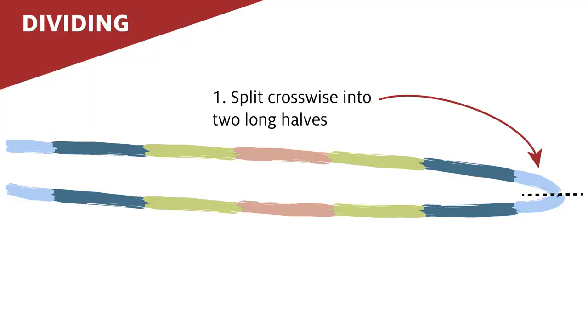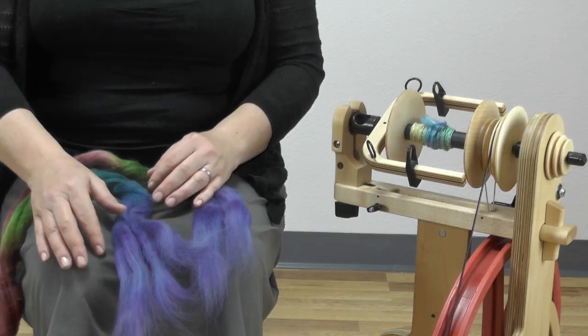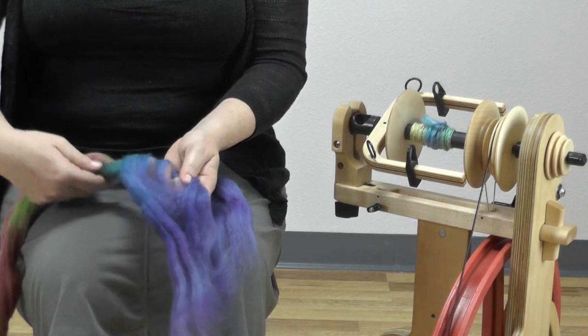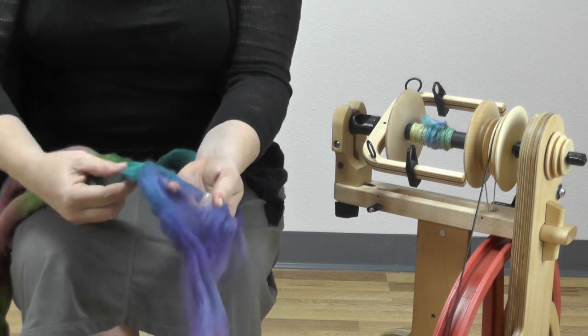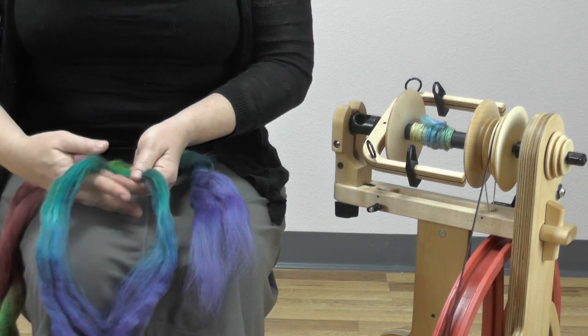Now that the braid has been split in half, each half will be split into equal sections. Take the first half and begin to divide it in half again. Make sure that you go little by little keeping as many of the fibers aligned as possible.